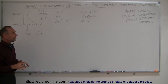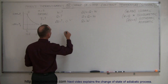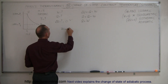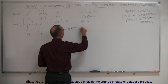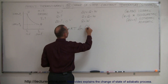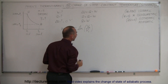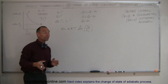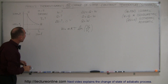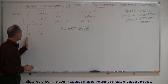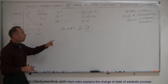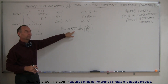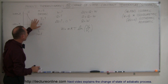The work done in an isothermic process can be found using the equation: W equals NRT times the natural log of V2 over V1, where V2 is the final volume and V1 is the initial volume. Since we know both volumes, all we need to find is the temperature.